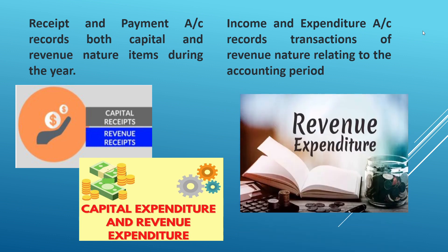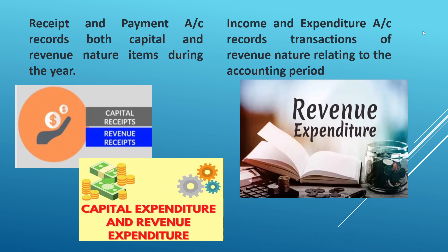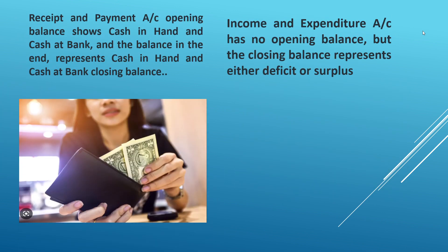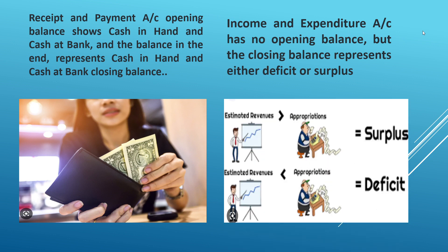Receipt and payment account's opening balance shows cash in hand and cash at bank, and the closing balance also represents cash in hand and cash at bank. Income and expenditure account has no opening balance, but the closing balance represents either a deficit or surplus.